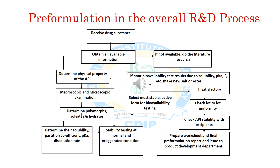Now we discuss pre-formulation in the overall research and development process. Whenever we receive a new drug substance, we first require all the information available about that drug molecule. If we don't have the required documents, we conduct a literature survey and collect all the information. Then we determine the physical properties of the active pharmaceutical ingredient, including macroscopic and microscopic examination of the drug molecule, then determine the polymorphs, solvates, and hydrates of the molecule. After that, we conduct solubility studies, determine the partition coefficient and pKa value of the drug molecule, and assess the dissolution rate.